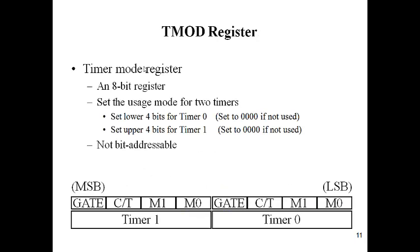Timer mode register is an 8-bit register. You cannot access individual bits, so it is not bit addressable. Timer 0 uses the lower half nibble, and timer 1 uses the next half byte. M0 and M1 are for timer mode selection. C/T is for timer or counter selection. Gate is for gating control. If it is 0, the system will take care of it internally. If it's 1, hardware needs to be changed. Same for timer 1.